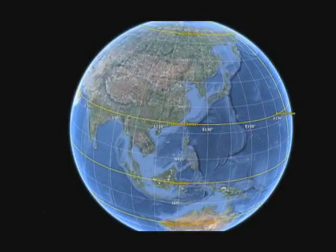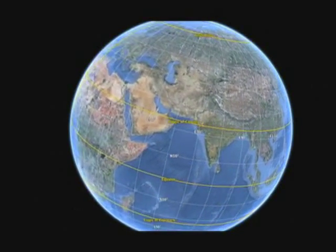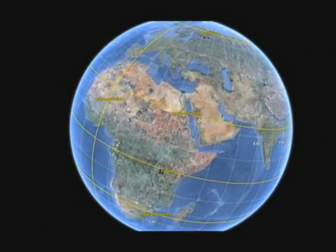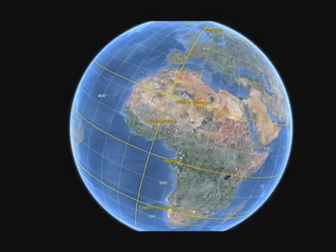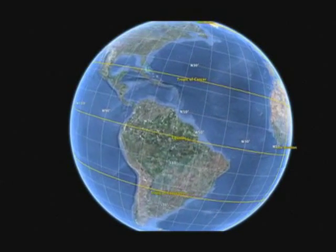Parallels of latitude and meridians of longitude form an invisible grid over the Earth. This grid is measured in degrees, minutes and seconds and it allows us to pinpoint exact locations anywhere on the face of the Earth.